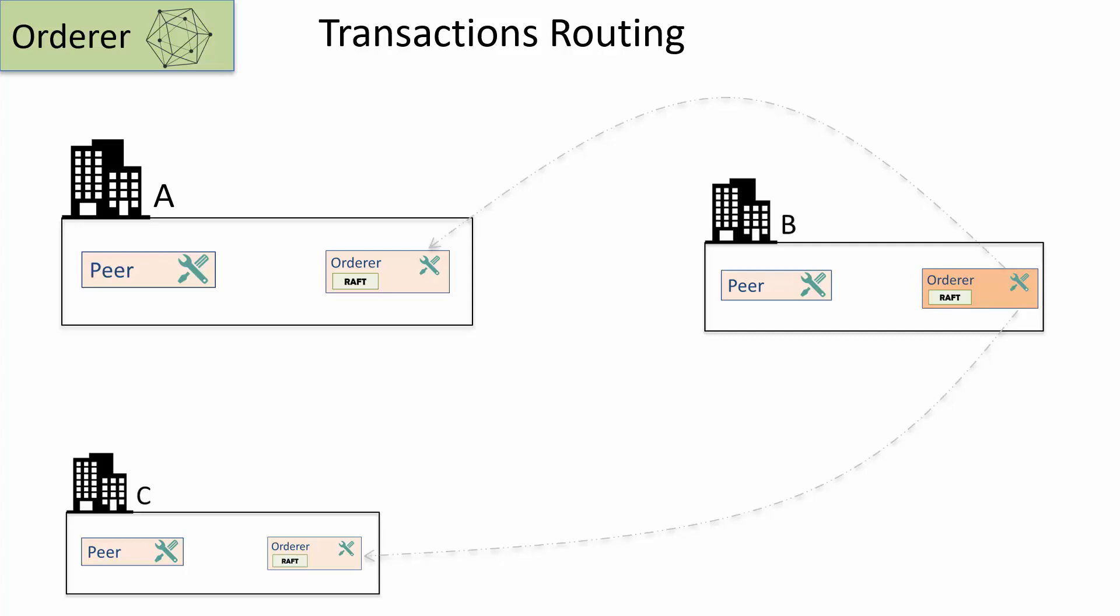Now, let's say an administrator in the organization A wants to execute some chain code. In that case, they'll submit the transaction to a local orderer which will inform the peer client who the leader is. In this case, the leader is B. And then the peer client will submit the transaction to the leader orderer instance. All of this process is transparent to the administrator or the application as it is handled by the underlying fabric client.